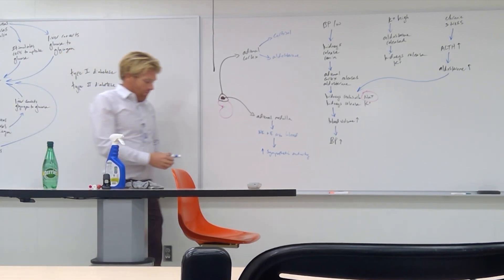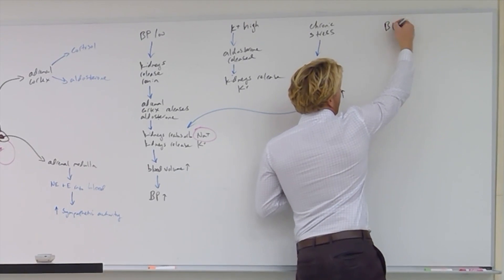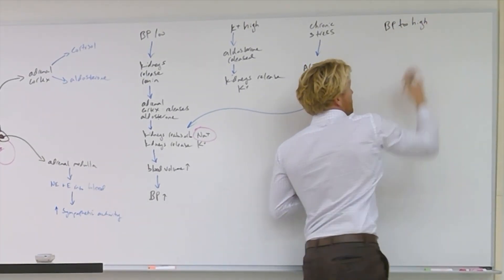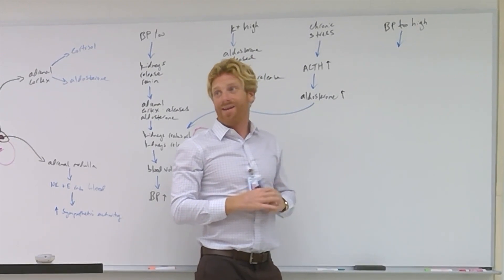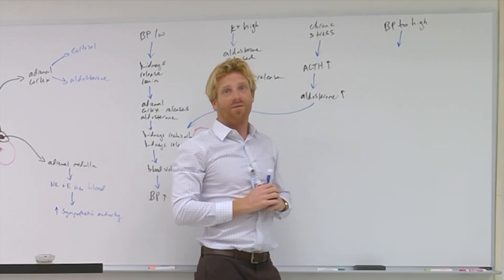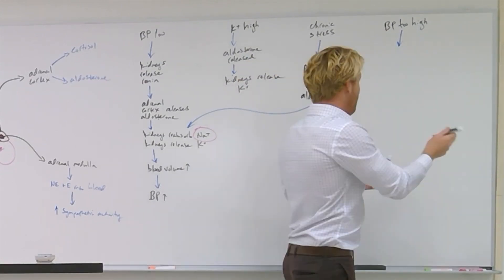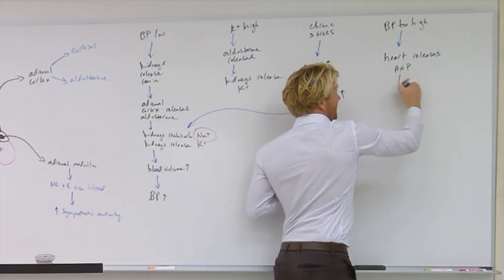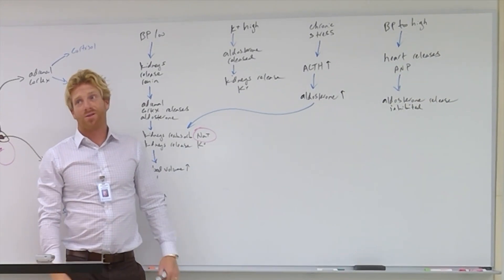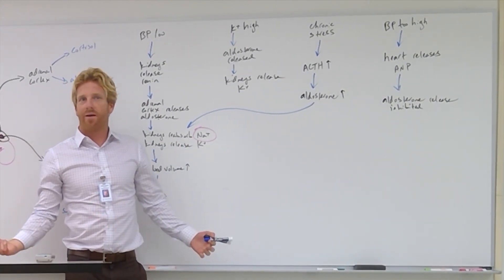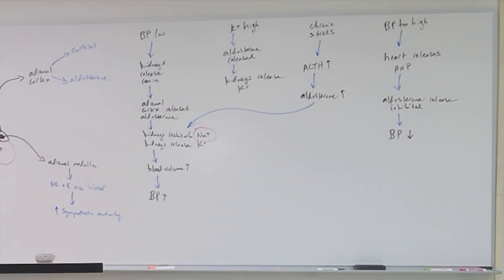The last thing that I want to talk about for aldosterone happens when blood pressure is too high, or higher than what your body thinks it should be. When blood pressure is too high, the heart actually releases a hormone called ANP. Like don't even worry about what it stands for. Just remember ANP. It stands for like atrial natriuretic peptide. Like it's just ANP. ANP inhibits the release of aldosterone from the adrenal cortex. What's that going to do to blood pressure? Lower it. Less aldosterone. We know aldosterone raises blood pressure. So this is going to lower blood pressure. And that's aldosterone.